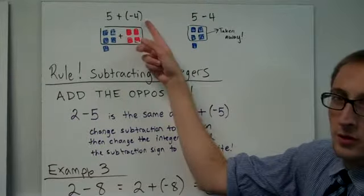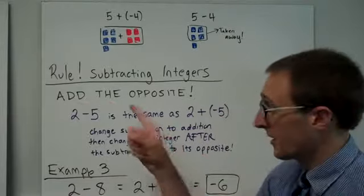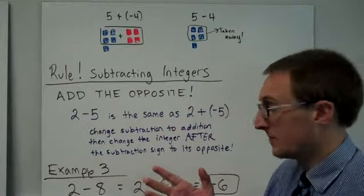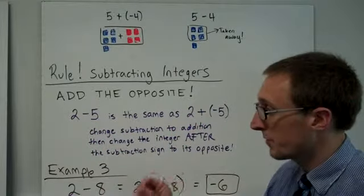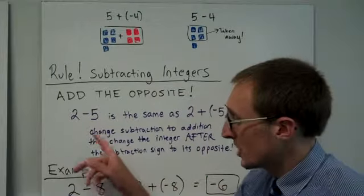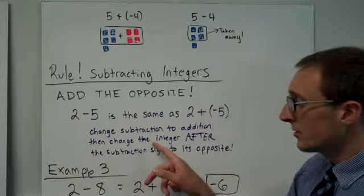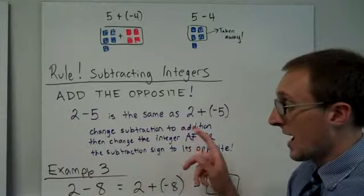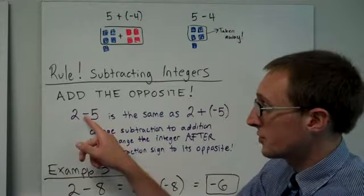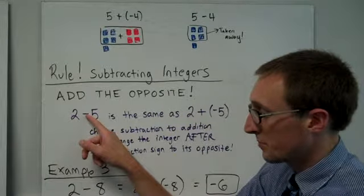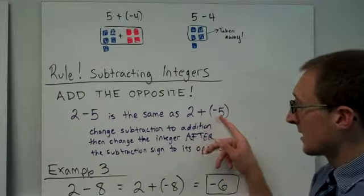These two problems look really similar, and that leads us into our subtracting integers rule. And the rule is actually one rule. It's add the opposite. So let's say we're doing 2 minus 5. It's the same thing as 2 plus negative 5. Notice what we did. We changed the subtraction sign into addition, and then the number following the subtraction sign, the number after the subtraction sign, please keep that in mind, changes to its opposite. So we have changed this one to addition. This minus sign becomes a plus, and this positive 5 becomes a negative 5. So we're adding a negative 5.